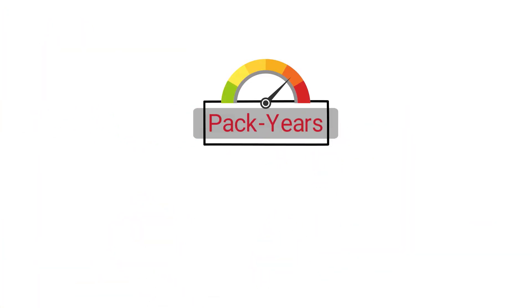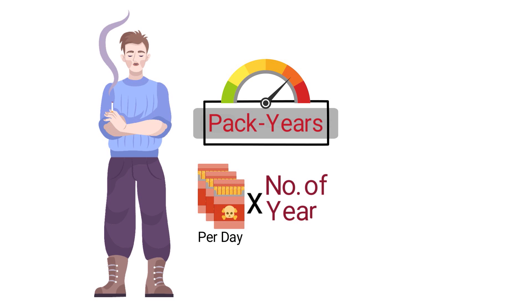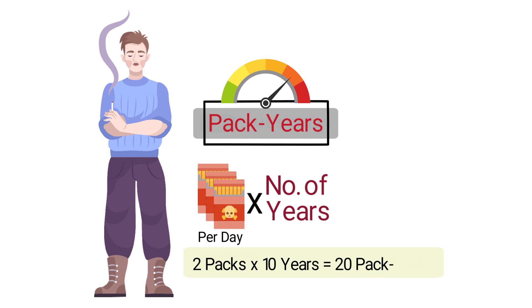Pack years is a way to measure how much a person has smoked over their lifetime. It is calculated by multiplying the number of packs of cigarettes smoked per day by the number of years the person has smoked. For example, if a person smoked two packs of cigarettes per day for 10 years, this would equal 20 pack years, because 2 times 10 is equal to 20.